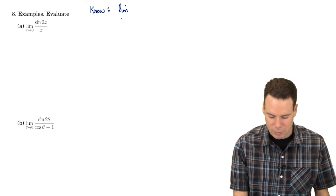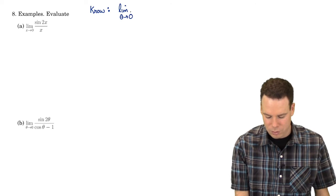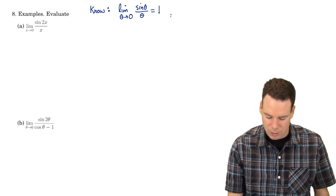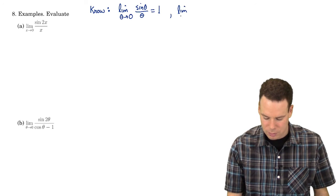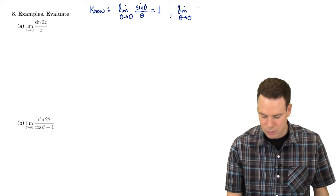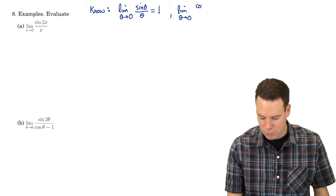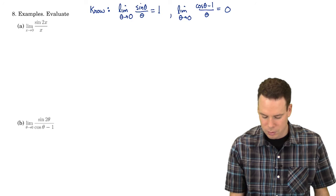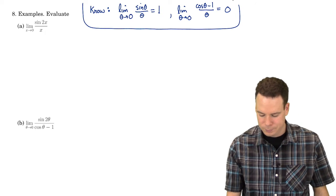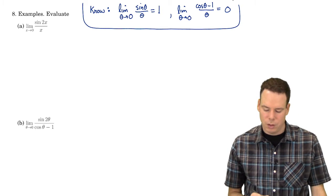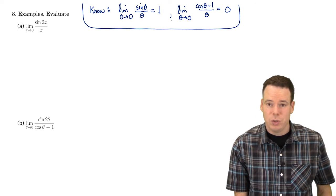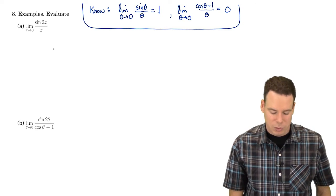What we know — our newfound knowledge, our newfound tools — is that the limit of sine theta over theta is 1, and our other special limit was cosine of theta minus 1 over theta, and that value is 0. Those are our two special limits that we know. Let's see if we can use those to find limits of these other functions.